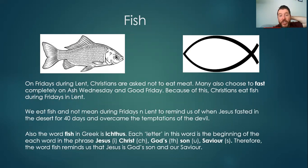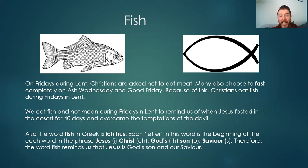Also, as well as reminding us of when Jesus fasted in the desert and resisted the devil, the word for fish in Greek is — I don't know how to pronounce it, so I'm going to have a go — ichthys. Each letter in this word is the beginning of each word in the phrase Jesus Christ, God, Son, and Saviour. The I is the first letter of Jesus in Greek. The CH are the first two letters of Christ. The TH means God — first two letters of God. The U in ichthys means Son — it's the first letter of Son. And the S in ichthys is the first letter of Saviour. So as well as reminding us of Jesus's sacrifice, fish remind us that Jesus is God's Son and Saviour. Saviour means he comes to save the world.